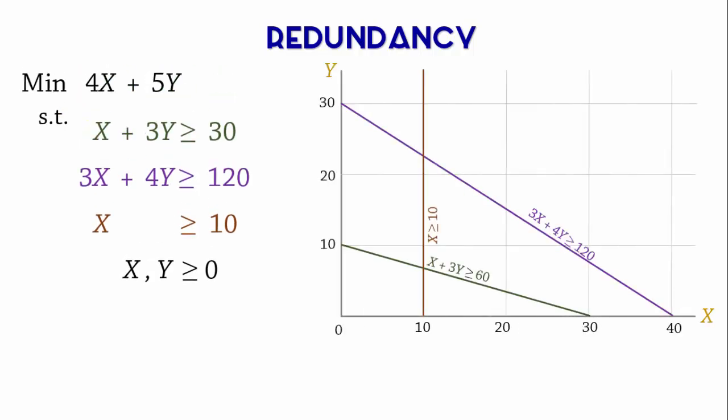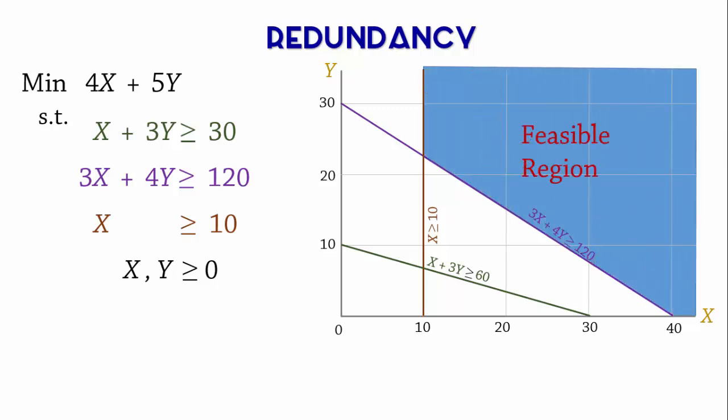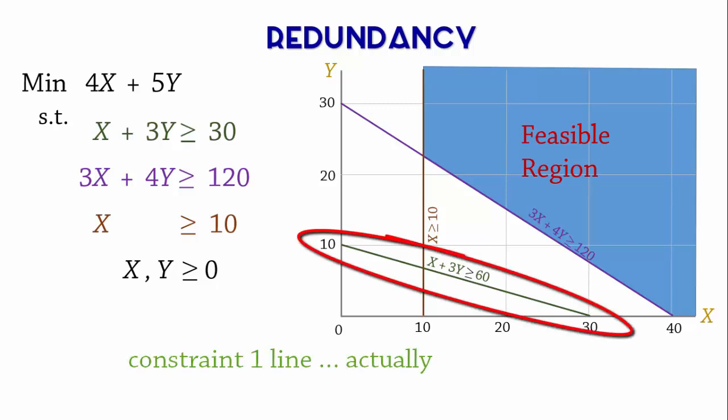Now consider this minimization problem. Here is a graph showing its constraint lines. Since these are all greater than constraints, here is the feasible region. As you can see here, constraint 3 line does not touch the feasible region at all. Therefore, it is redundant.